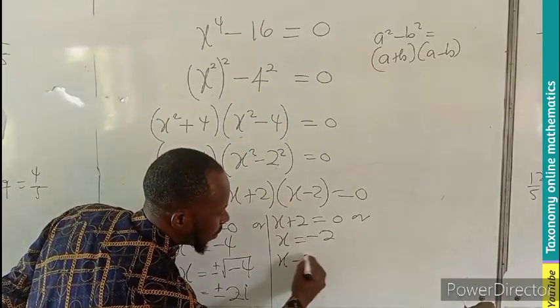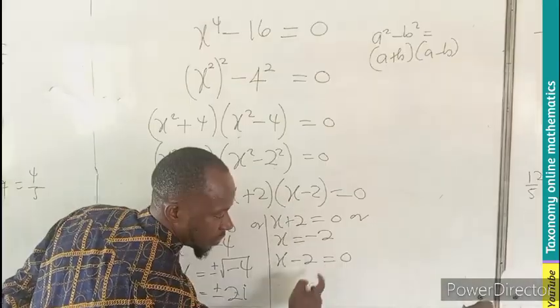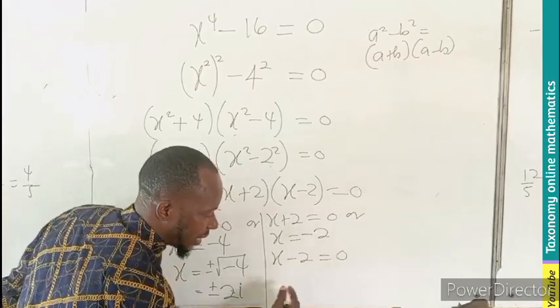We take our x minus 2 equals to 0, adding 2 to both sides, gives us what? x equals to 2.